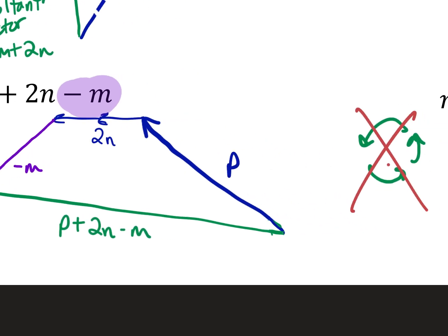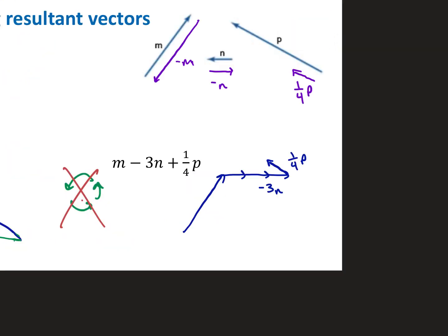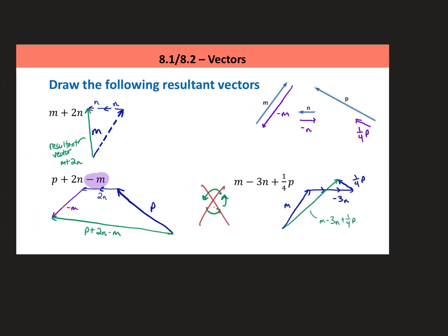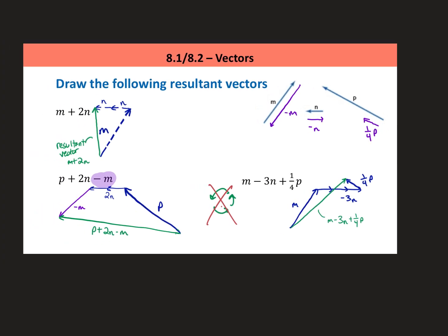That is the second example. And I'll let you try the third example. There's the vector trail for that third example. I have vector m, regular vector m, and then minus three vector n's. So vector n but going in the opposite direction. And then one-fourth vector p, so it's vector p but a fourth the distance. This creates a cool situation where you have the resultant vector crossing the path of the individual pieces, the trail. That's totally okay. That happens from time to time. m minus three n plus one-fourth p, our resultant vector.